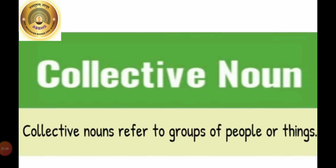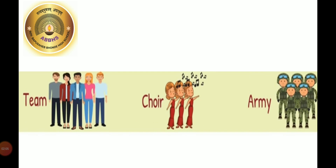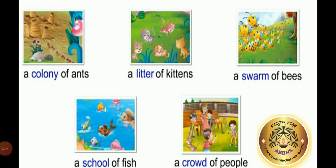Collective Noun: Collective nouns refer to groups of people or things. For example, team, choir, army, etc. Let's see some more examples: a colony of ants, a litter of kittens, a swarm of bees, a school of fish, a crowd of people. Did you see anything common in these words? Colony, litter, swarm, school and crowd — all these words refer to a group of people, animals or things.